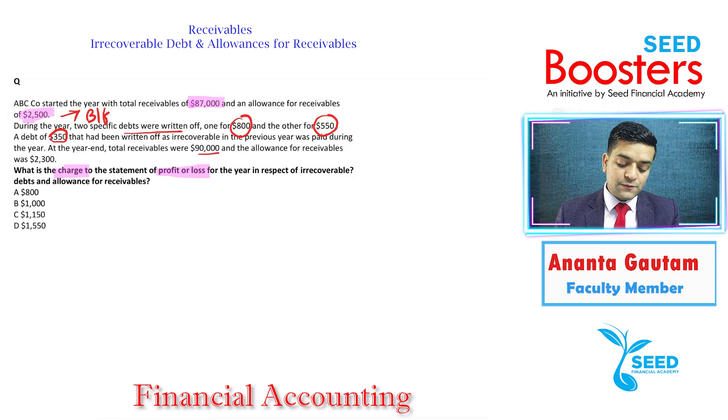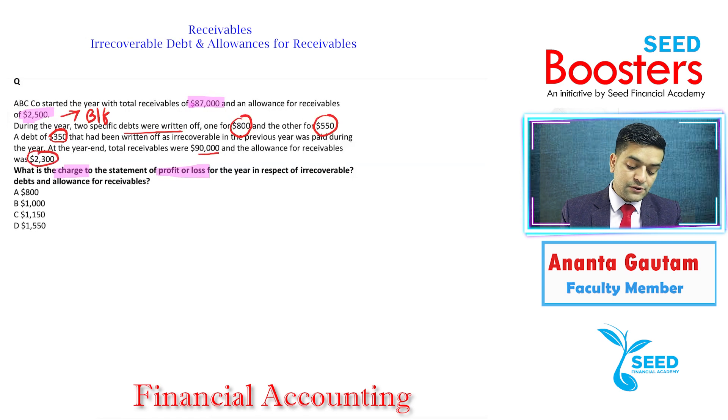And the allowance for receivables was 2,300. So this is the carry-forward allowance for receivables.